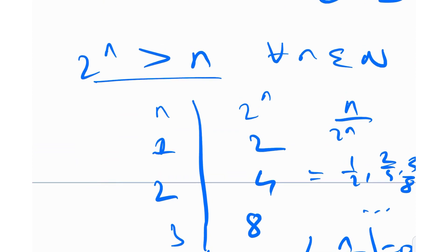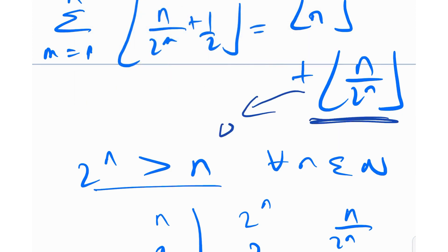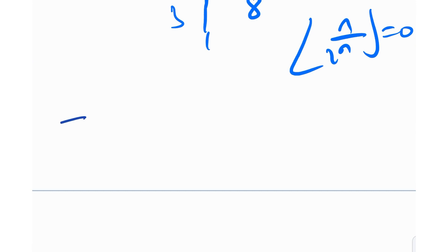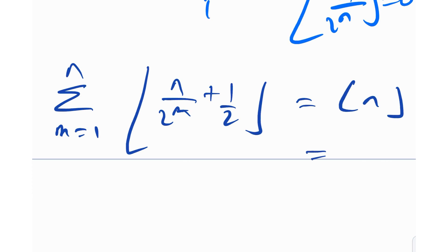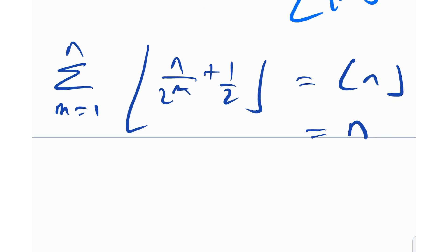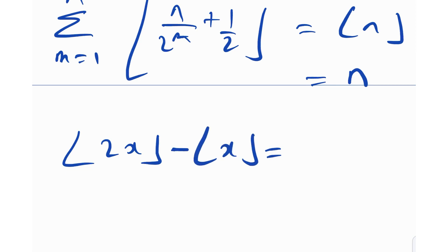Since 2^n > n for all natural numbers n, floor(n/2^n) = 0. So the entire sum equals floor(n) − 0 = floor(n). Since n is a natural number, floor(n) = n. Hence we have proved the given identity, and it works for all n belonging to natural numbers. A beautiful result: floor(2x) − floor(x) = floor(x + 1/2).